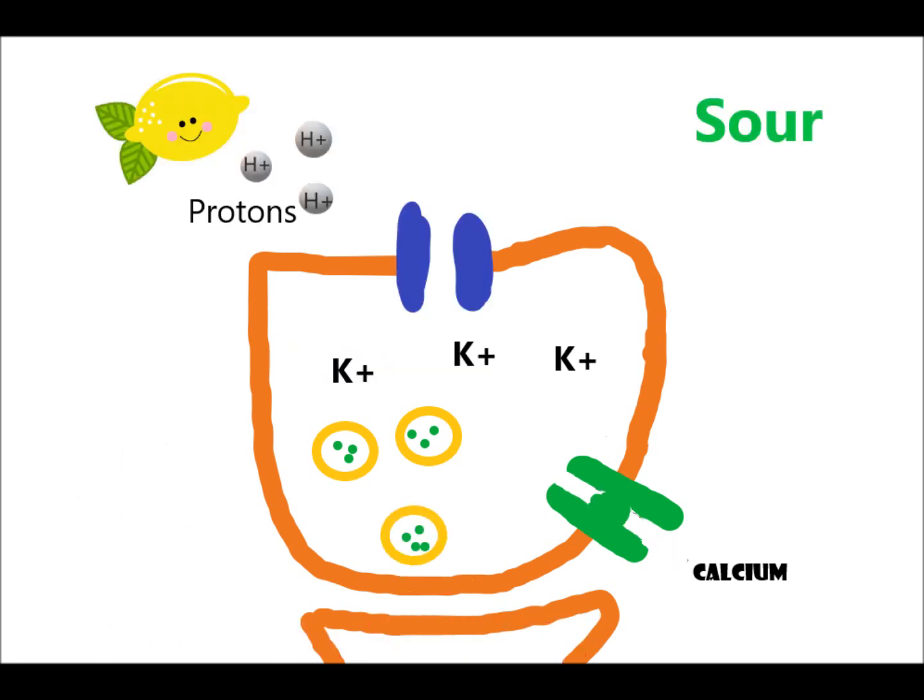Our next type of taste to figure out is sour. Sour foods are acidic. When a food is acidic, it has something called protons. If a type of food is more acidic, that is, a higher concentration of protons. So, if you are eating a lemon or drinking lemon juice, then these protons will interact with your sour taste receptors. Under normal conditions, these receptors have potassium channels that allow potassium to leak out of the cell.